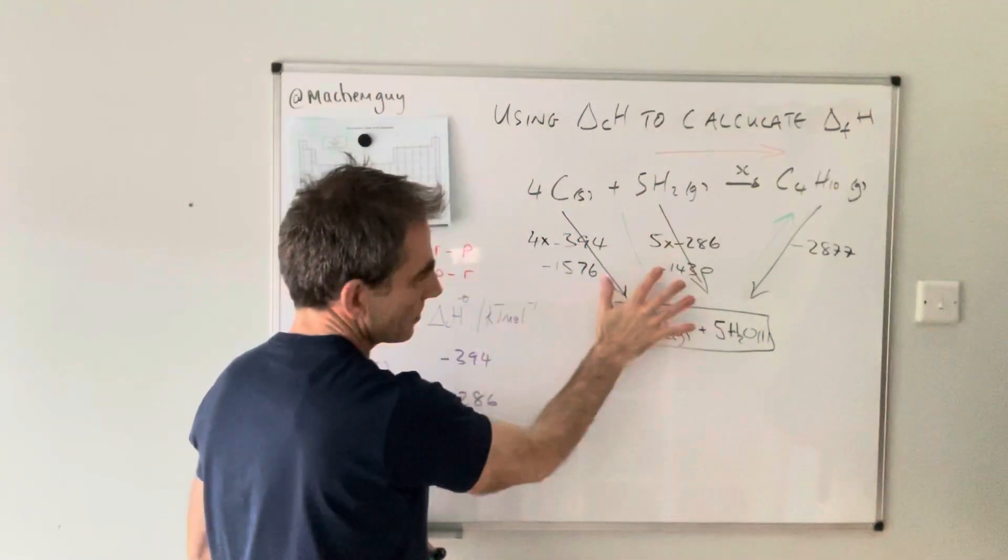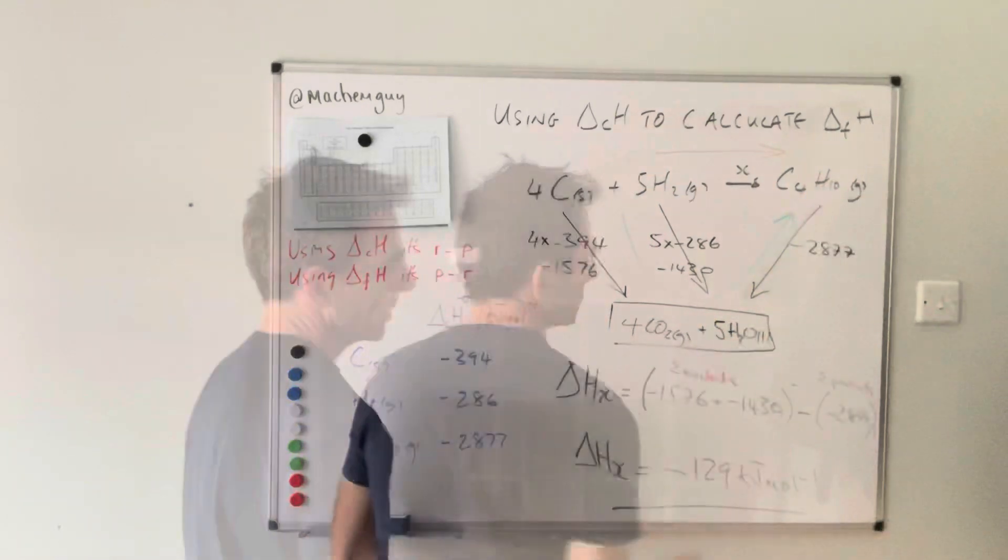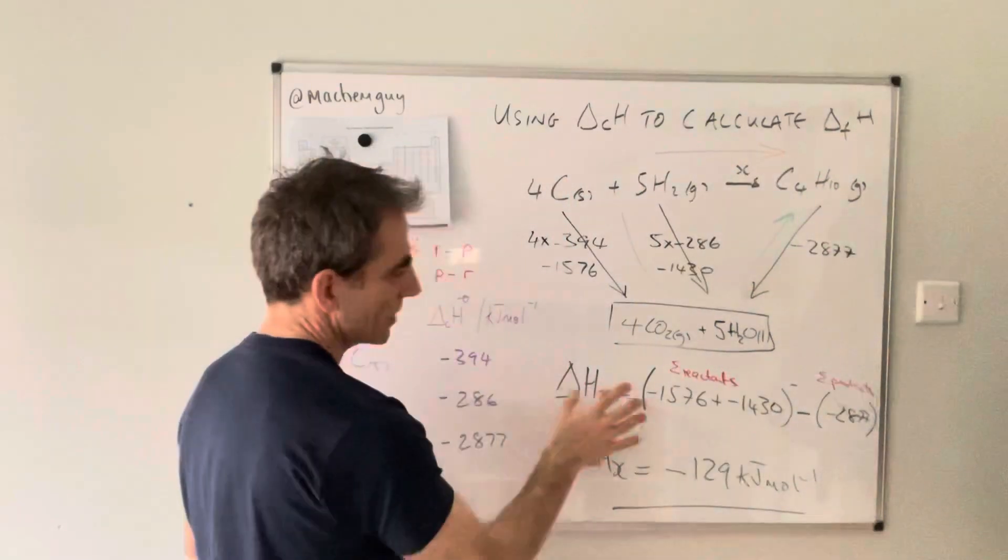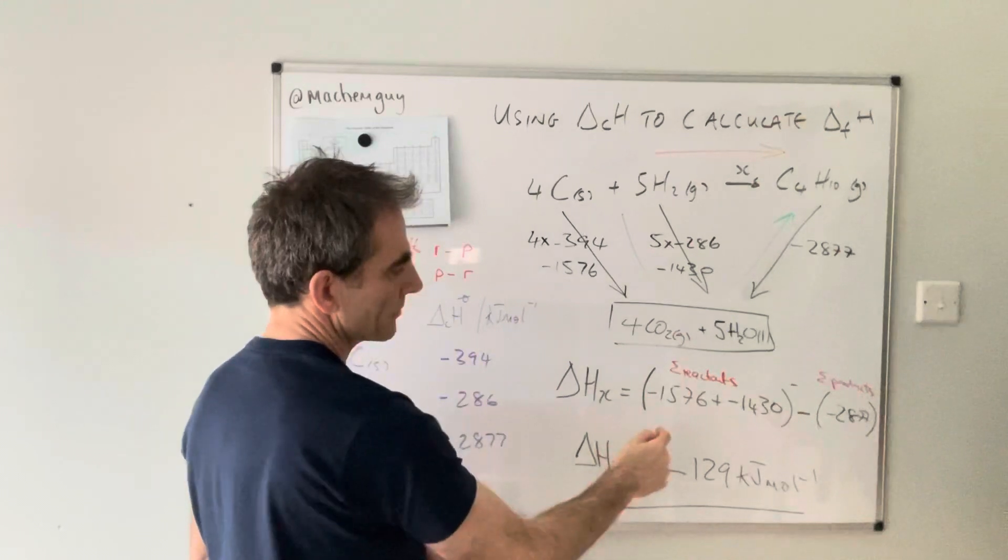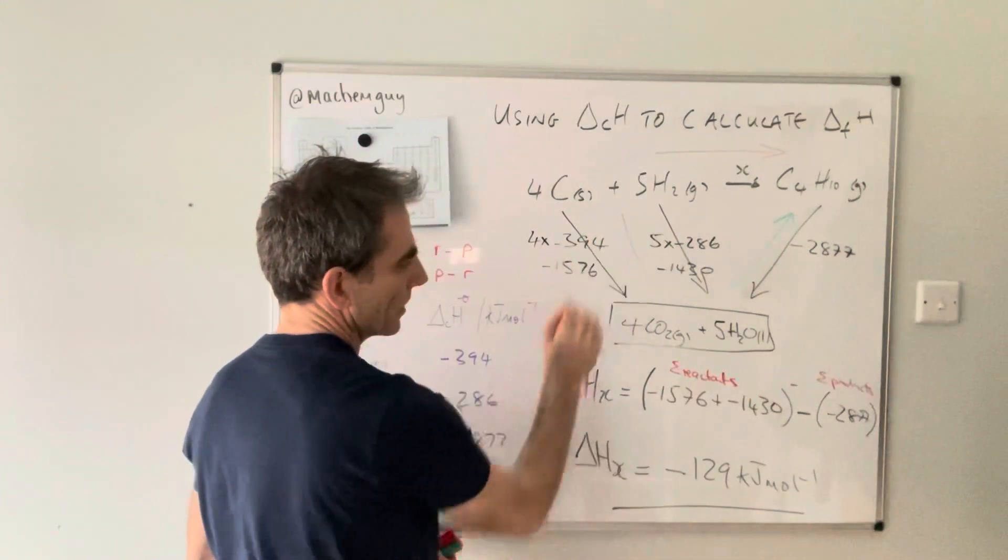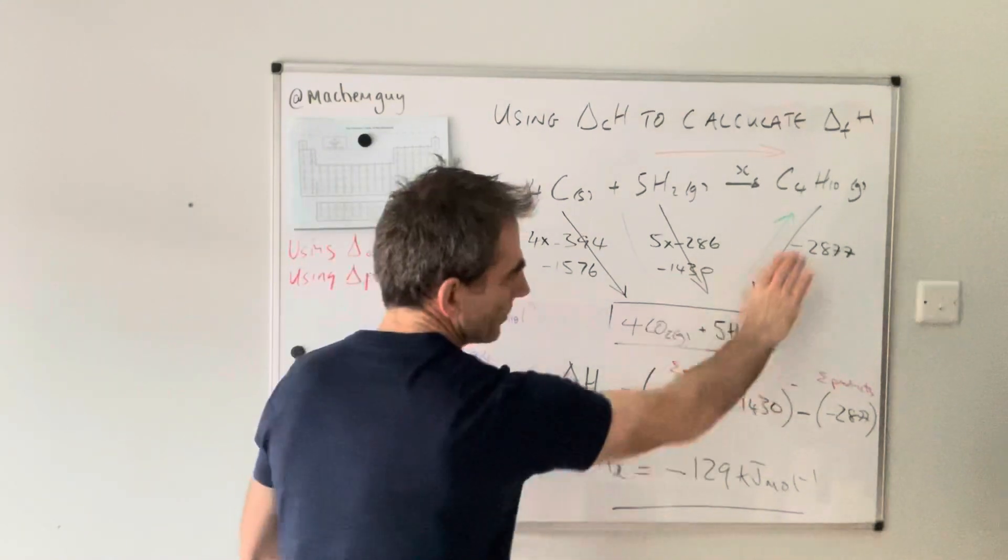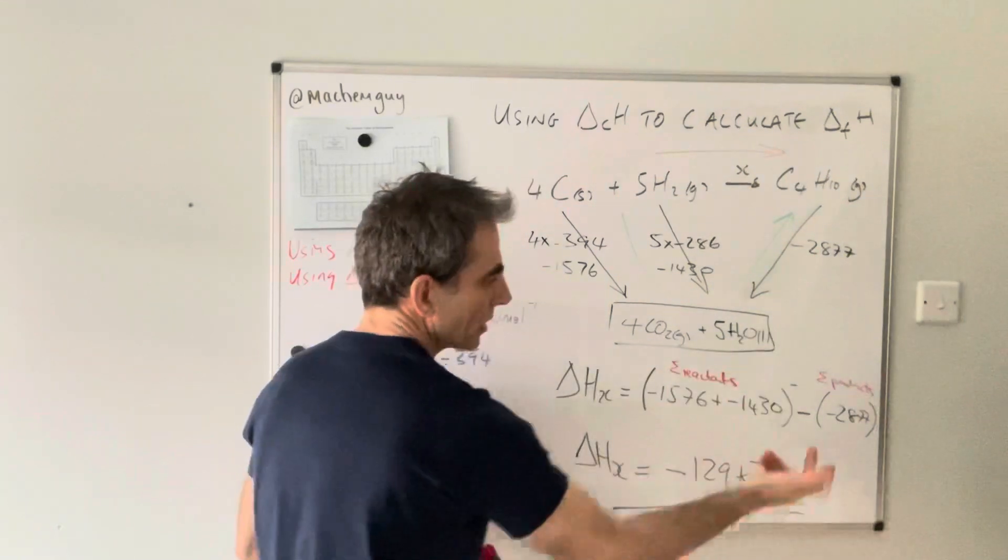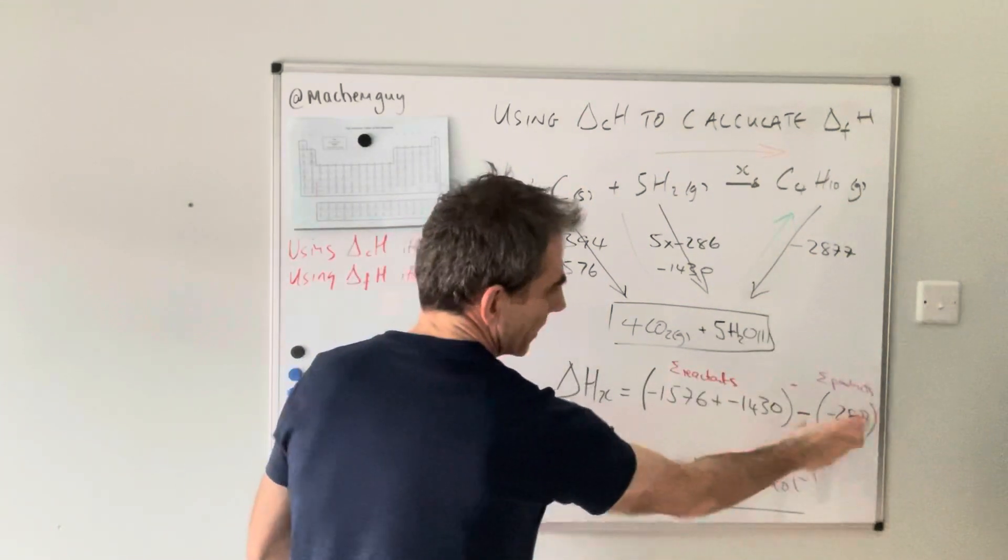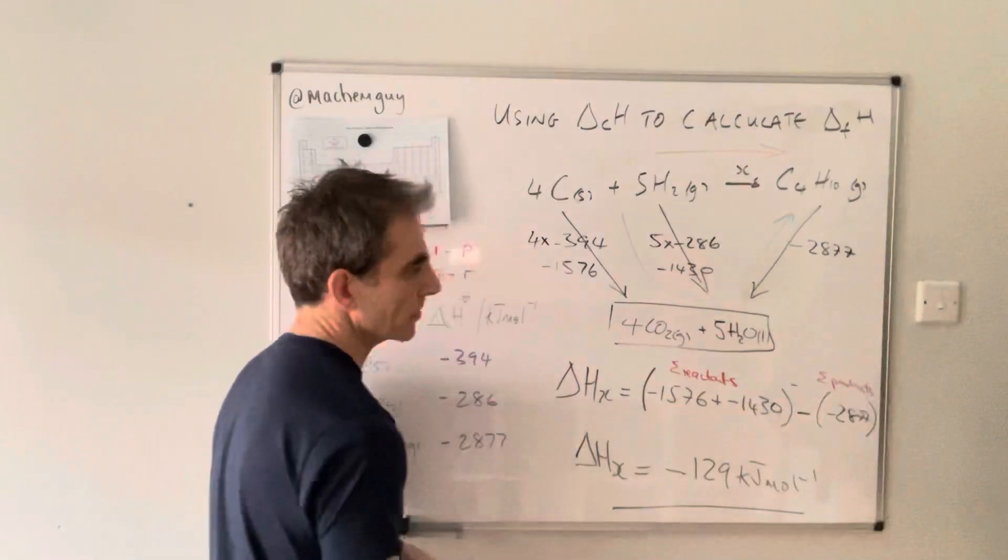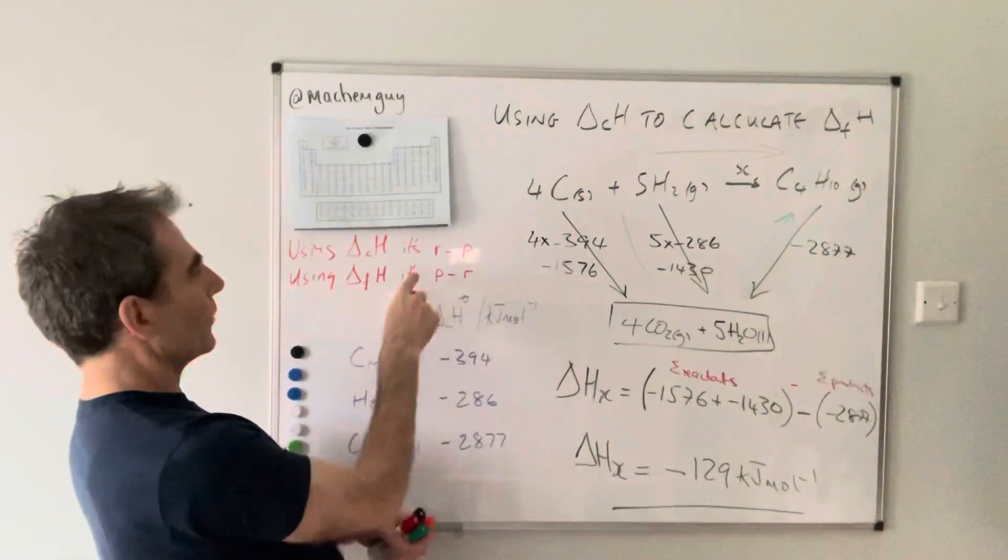So it's those minus that one. When you put the numbers in, you get the unknown enthalpy change equals the sum of the enthalpy changes of combustion of the reactants—those numbers there—minus, remember that arrow is going in the wrong direction, so we flip it around and change the sign: minus (-2877). That's the sum of the enthalpy change of combustion of the products. You can see there's the formula: using ΔHc, it's reactants minus products.